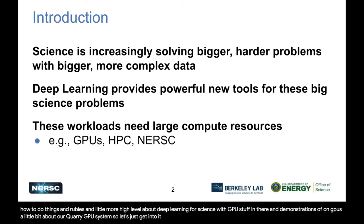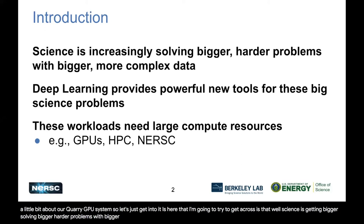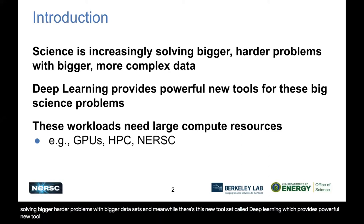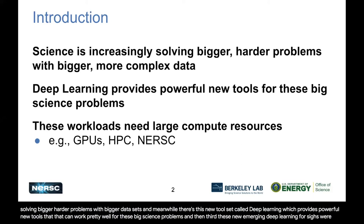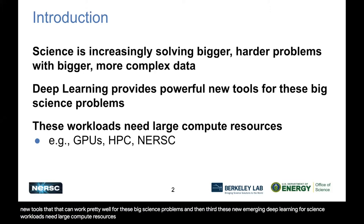The three main ideas I'm going to try to get across: first, science is getting bigger, solving bigger, harder problems with bigger datasets. Second, there's this new toolset called deep learning which provides powerful new tools that can work pretty well for these big science problems. Third, these new emerging deep learning for science workloads need large compute resources, which we can address with GPUs, increasingly with HPC systems and with NERSC.